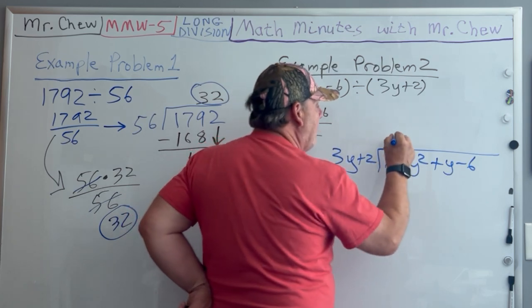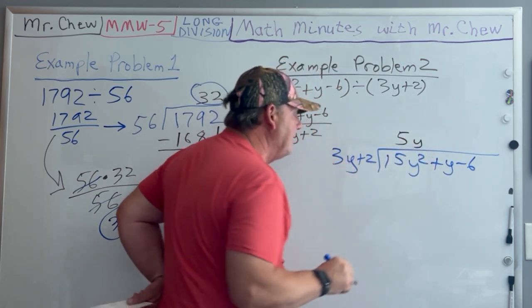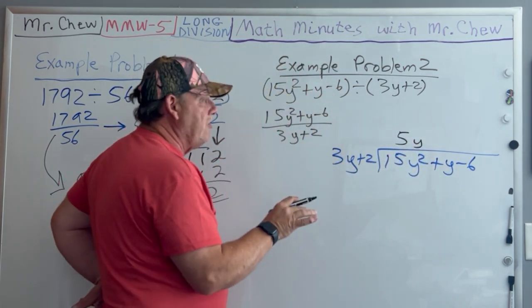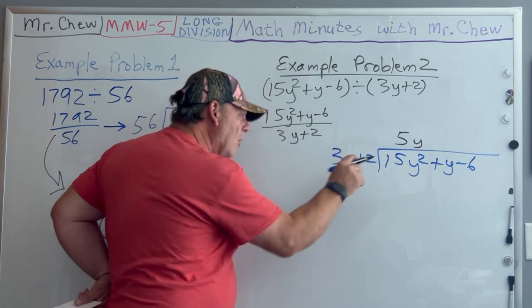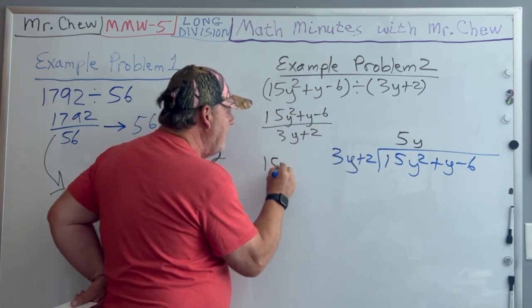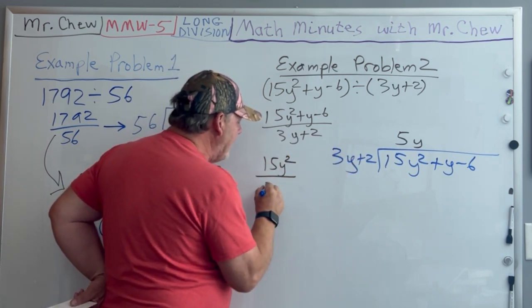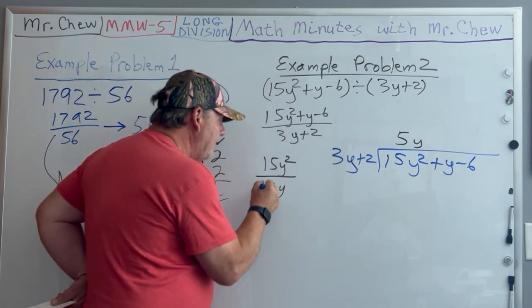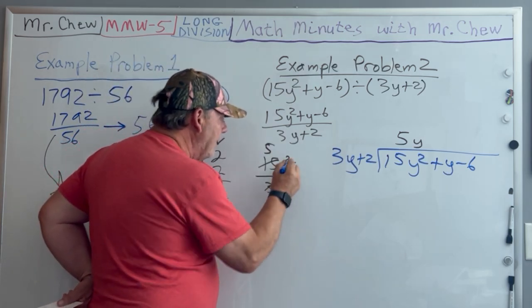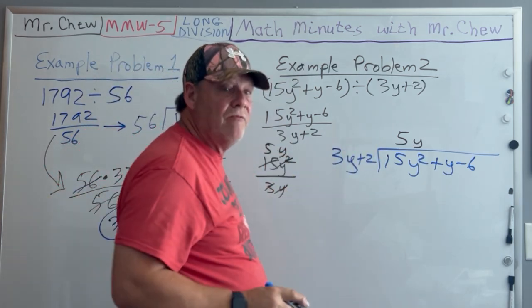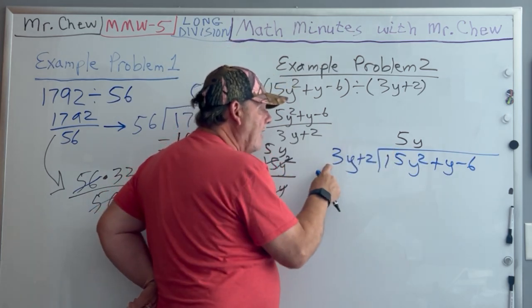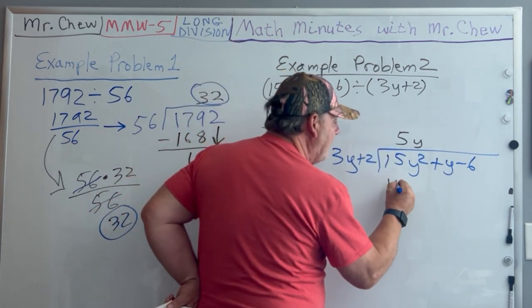If you have no idea how I got that, Mr. Chu, I take my 15y² and divide that by 3y. This cancels and I get 5y. 5y times 3y is 15y².